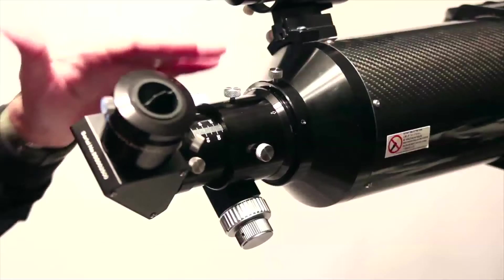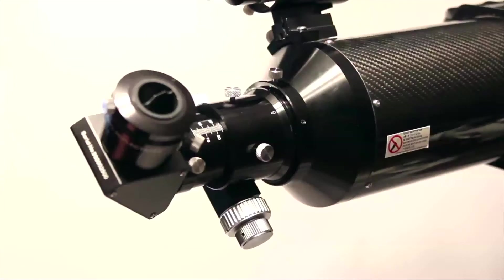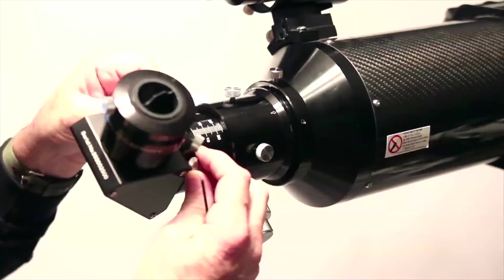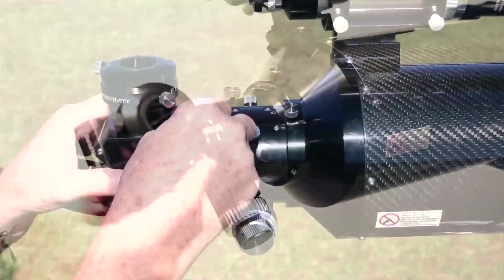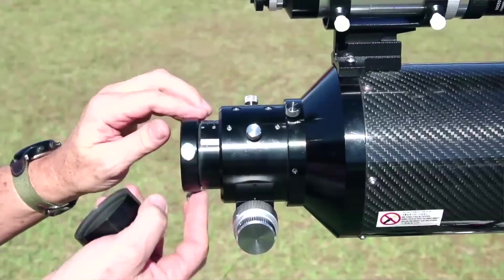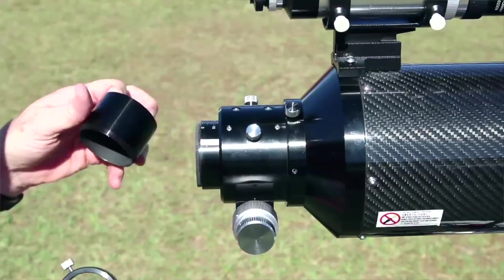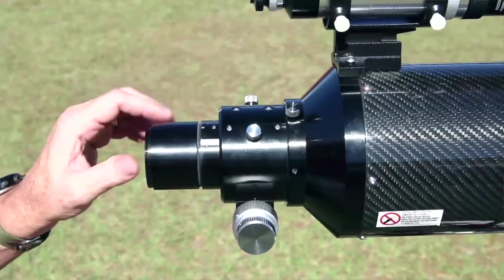Alright, so those are the primary knobs you see on the top of the focuser. These knobs here are for the diagonal and they release the diagonal so that the diagonal will come out and allow you to put on a digital camera or other optional accessories for photography. So those are the only knobs here on the top.